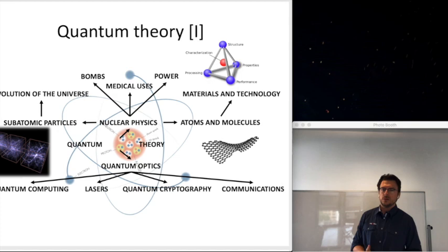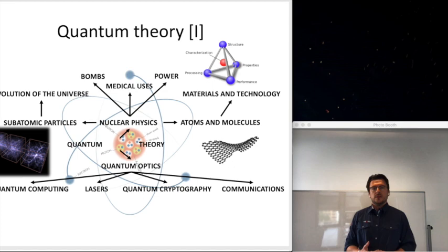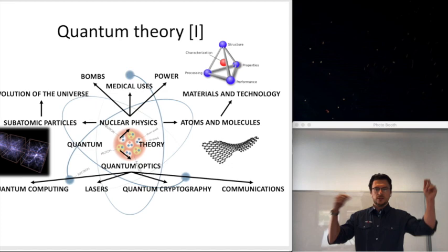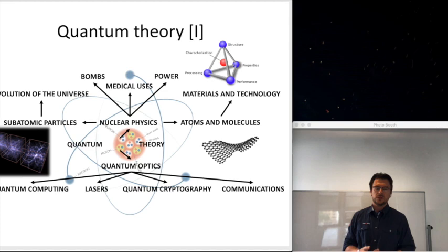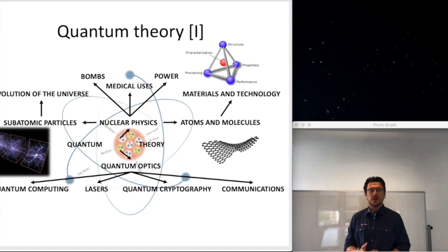As systems become bigger — say a molecule with 1000 to 1500 electrons, which can be industrially relevant — simulations with classical computers become very difficult or impossible. Adding one electron means considering the Coulomb interaction between electrons, the attraction between electron and nuclei, the repulsion between nuclei, all on a quantum physical level. That's rather difficult for a classical computer.